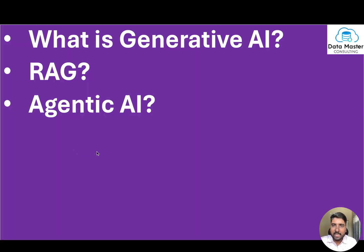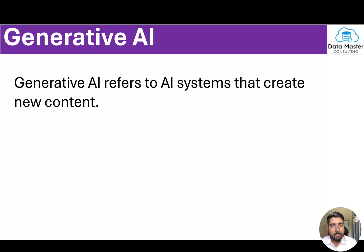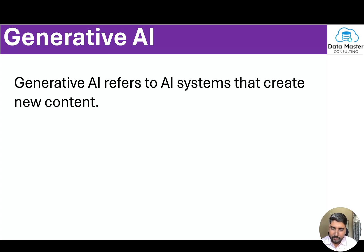First, we are going to see what is generative AI. Simply put, generative AI refers to an AI system that creates new content. A great example is ChatGPT. There are many other models like Microsoft's Copilot, Google's Gemini, and so on. You get an interface where you write a prompt — a question — and the generative AI model generates an output. It can generate text, audio, video, code, and much more.